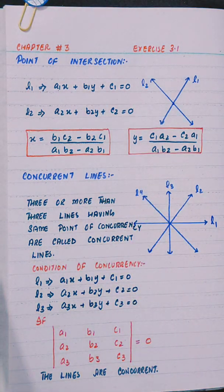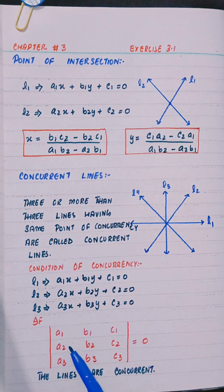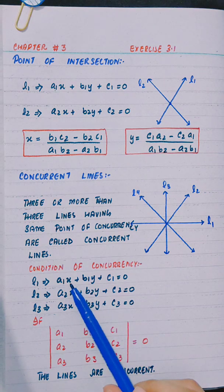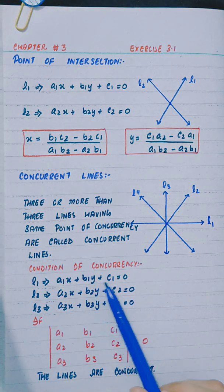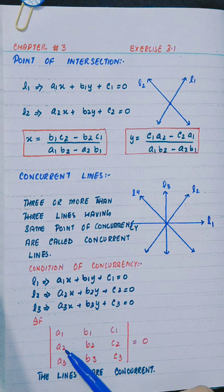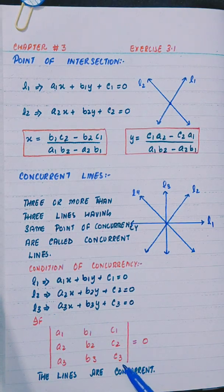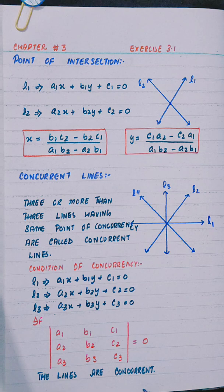Now, concurrent lines: three or more lines having the same point of concurrency are called concurrent lines. To find the condition of concurrency, we find the determinant of the matrix with rows A1B1C1, A2B2C2, and A3B3C3. Here A1 is the coefficient of x, B1 is the coefficient of y, and C1 is the constant — similarly for L2 and L3. If the determinant equals 0, the lines are concurrent.